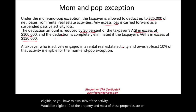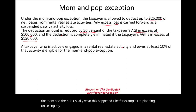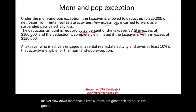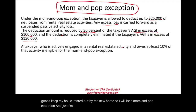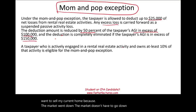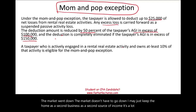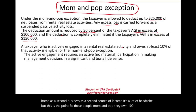A taxpayer who is actively engaged in a rental real estate activity and owns at least 10% of the activity is eligible. Most of these properties are owned 100% by the mom and pop. For example, if I'm planning on selling my home and waiting for the real estate market to slow down, I might keep my house, rent it out, and buy a new home — making me a mom and pop exception. These people usually own 100% of the business.